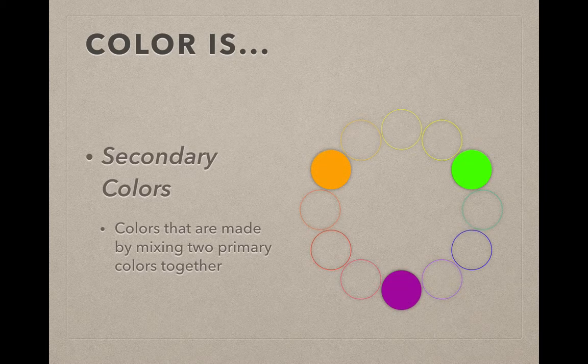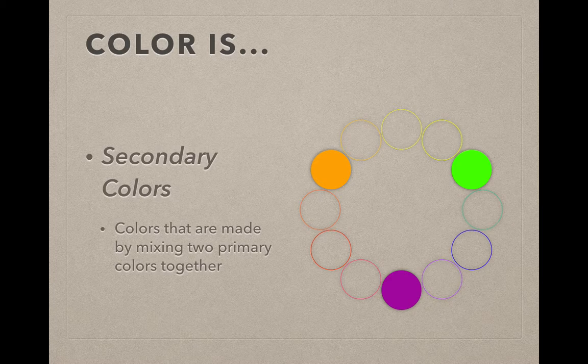Secondary colors are colors that are made by mixing two primaries together. So we have three primaries, we have three secondaries. So you have yellow and red making orange, you have red and blue making violet, and you have blue and yellow making green.